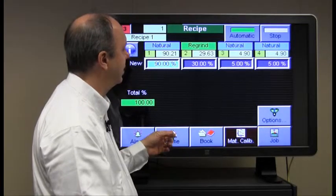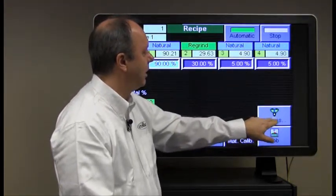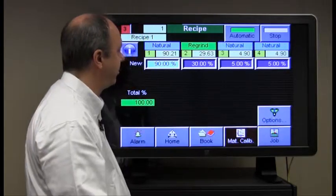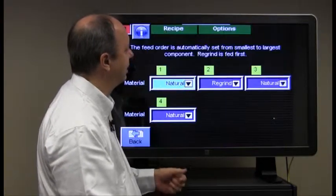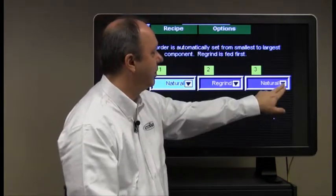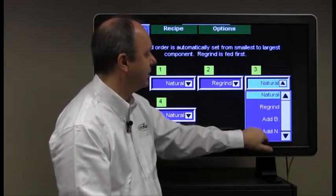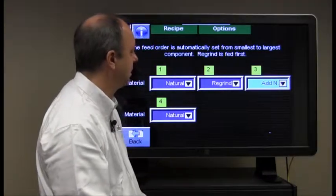So returning to the recipe screen, if we wanted to change this one for instance to a different type of material, we would go to the options button. Again, we're on recipe options screen. Go to component 3 and we'll choose additive natural here. Okay.